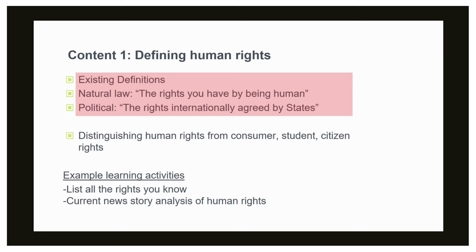Natural law means something that exists in nature or seems so obvious it just is what it is. This is very useful because when you talk about human rights around the world, most people have the same idea of what human rights are. I often ask students to list human rights as an early exercise, and no matter where I am or the background of the students, most people know most basic human rights. Most people off the top of their head could name about half the rights in the Universal Declaration of Human Rights, and with a bit of prompting, probably three quarters of it. There is a universal sense of justice around the world.